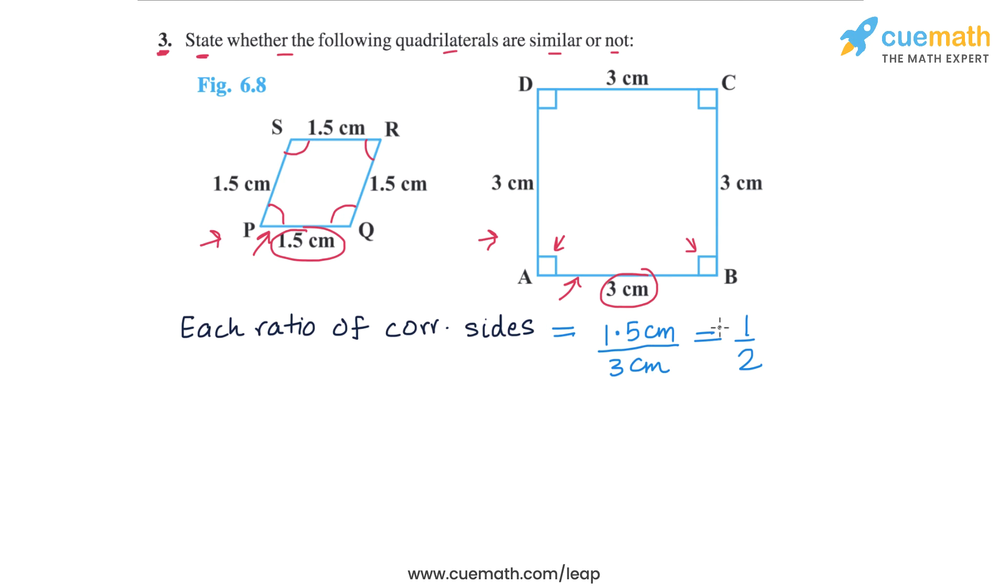On the other hand, if we compare the corresponding angles, say angle P and angle A, the corresponding angles are unequal. Each pair of corresponding angles are unequal. So we can write this fact also: corresponding angles are unequal.